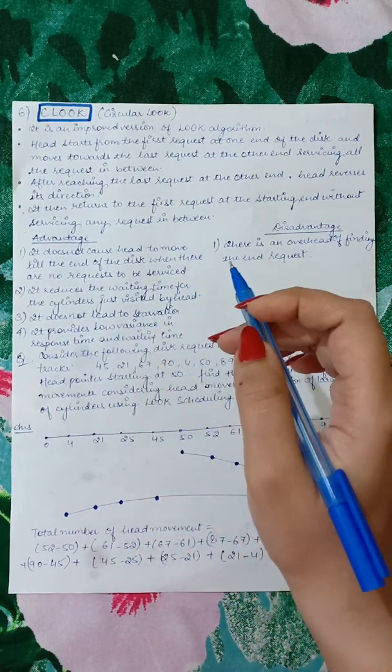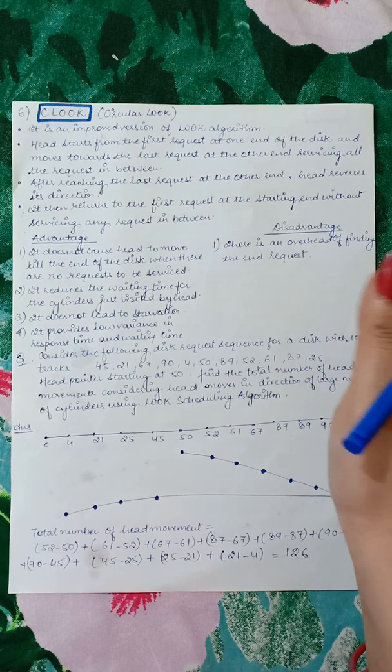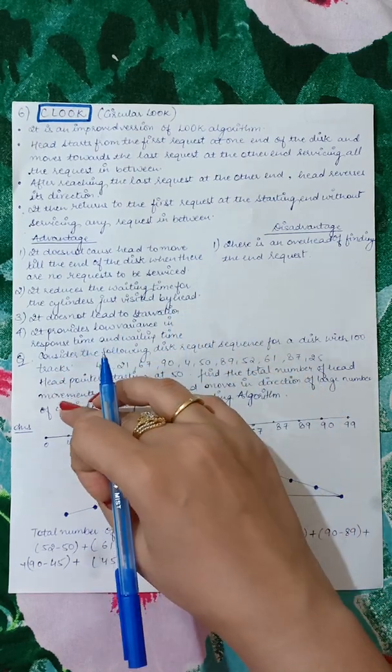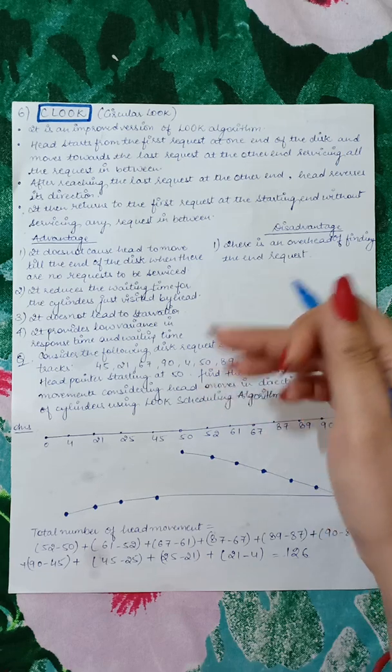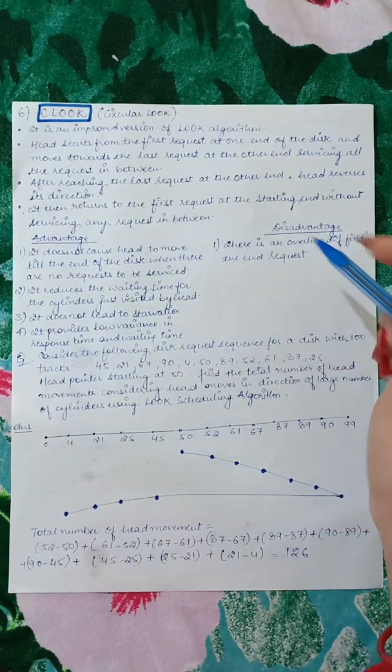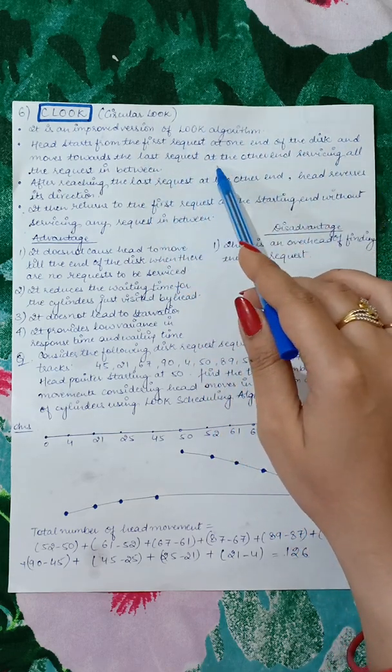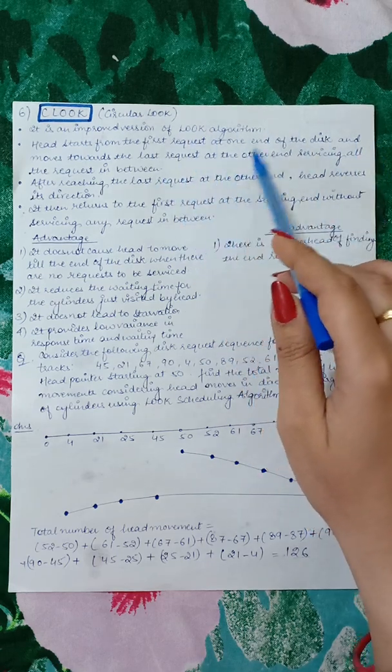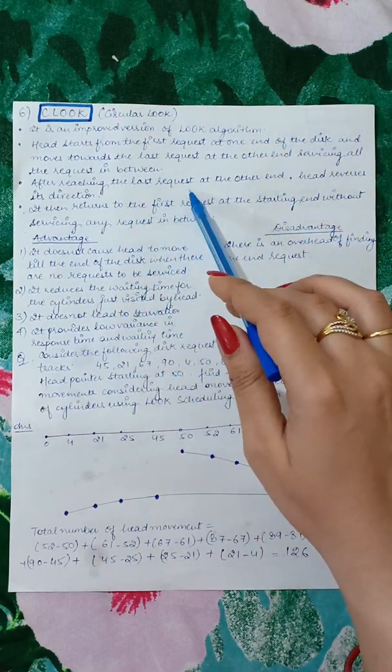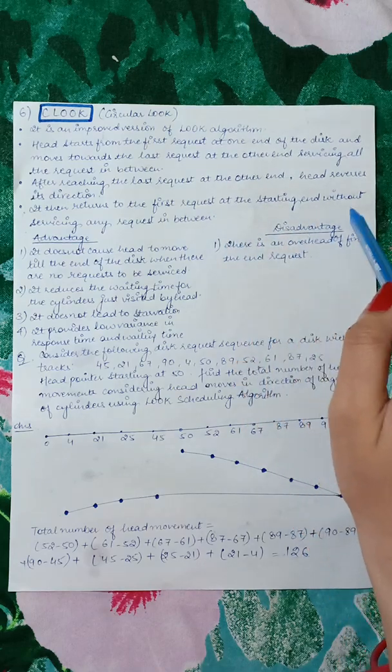During the reverse movement, it is servicing the requests, which makes the waiting time slightly larger. What can be done is when the head movement is returning after completing requests in one direction, while returning, we do not fulfill any requests. We jump to the first request and then service the remaining requests. This leads to improvement in waiting time and reduces variance in response time. It is an improved version of LOOK algorithm. The head starts from the first request at one end and moves towards the last request at the other end, servicing all requests in between. After reaching the last request, the head reverses its direction.